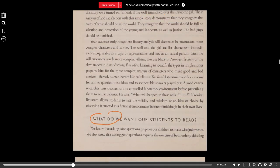Your students' early forays into literary analysis will deepen as they encounter more complex characters and stories. The wolf and the girl are flat characters, immediately recognizable as a type of representative and not as an actual person. Later, he will encounter much more complex villains, like the Nazi in Number of the Stars, or the slave traders in Amos Fortune, Free Man. Learning to identify the types and simple stories prepares him for the more complex analysis of characters who make good and bad choices. Flawed human heroes like Achilles in the Iliad.